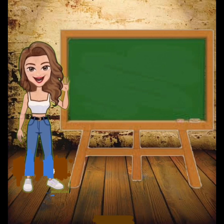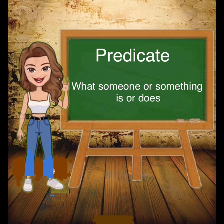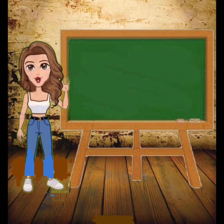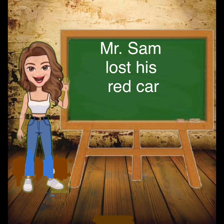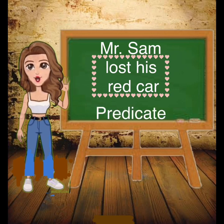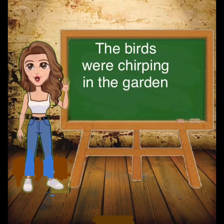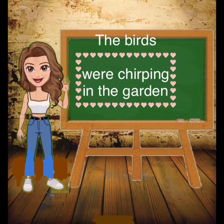Let's move to the second part: the predicate. It is the telling part — it tells what someone or something is or does. Let's take an example: Mr. Sam lost his red car. What did Mr. Sam do? He lost his red car. Can you guess the predicate in the next sentence? Yes, the birds were chirping in the garden. Birds chirping in the garden is the predicate.